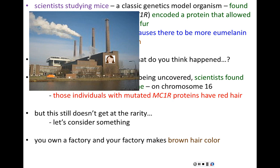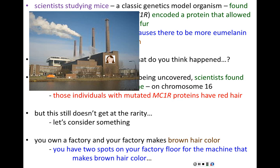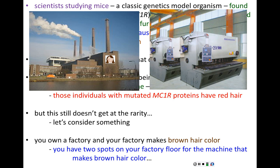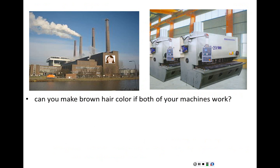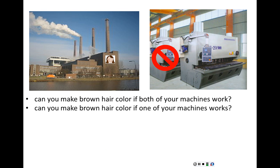Let's consider that the body is a factory. You own this factory — it's your body — and the factory makes brown hair color. In fact, you have two machines on your factory floor that make brown hair color. So there's redundancy built in. Can you make brown hair if both machines are working? Of course — each machine can make brown hair. Can you make brown hair if one machine is broken and the other works? Yes, because the factory has two machines to do the job of one. If one breaks, the other can still do the job. But what if both machines are broken?